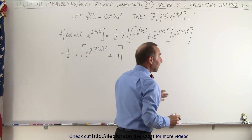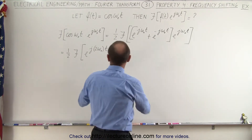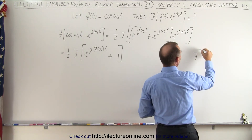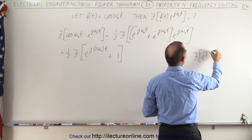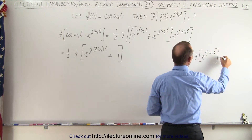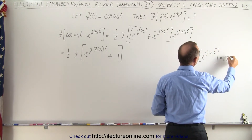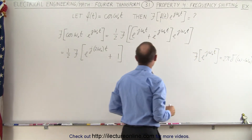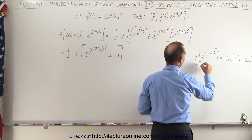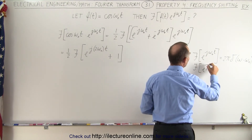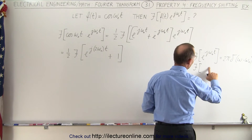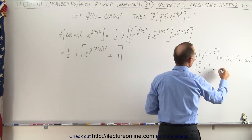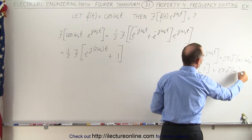Let's recall how to take the Fourier transform of these terms. The Fourier transform of e to the j omega sub-naught t is equal to two pi times the delta function of omega minus omega sub-naught. And the Fourier transform of one is equal to two pi times the delta function of omega.